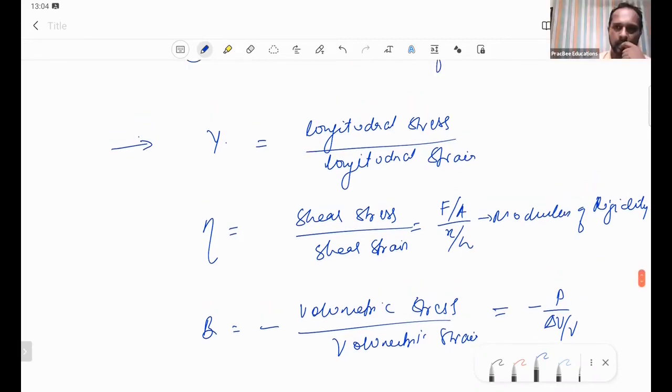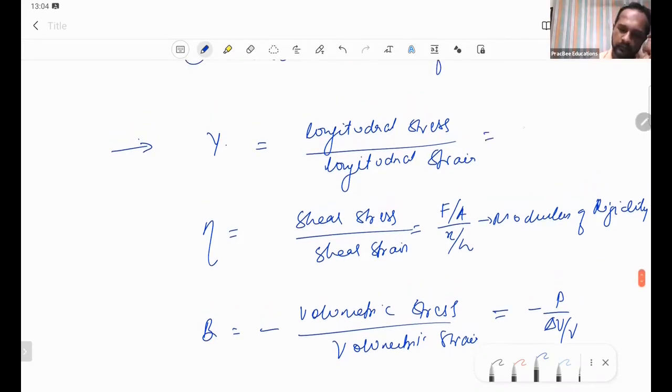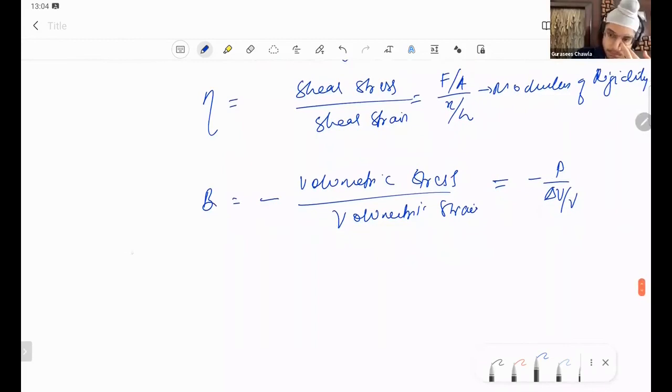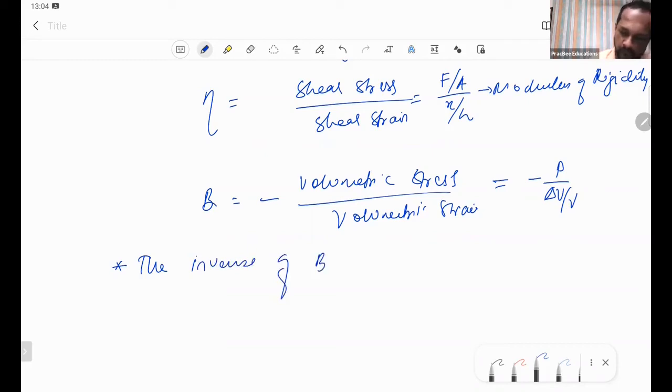And longitudinal stress F upon A, delta L upon L. The inverse of bulk modulus is called as compressibility.